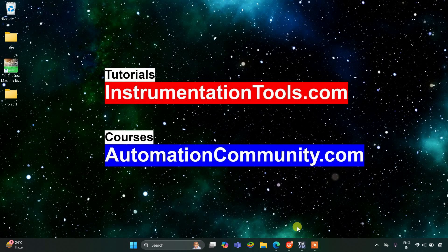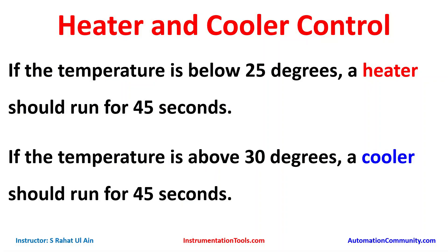Hello everyone, welcome to automation community. Today in this video we are going to discuss an example about heater and cooler control. If the temperature is below 25 degrees, a heater should run for 45 seconds. And if the temperature is above 30 degrees, a cooler should run for 45 seconds. A low temperature sensor will detect when temperature is below 25 degrees and turn on the heater, and a high temperature sensor will detect when temperature is above 30 degrees Celsius.